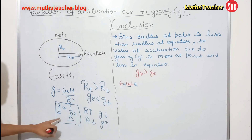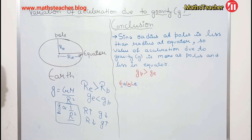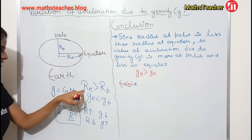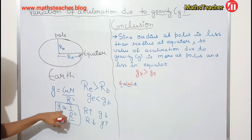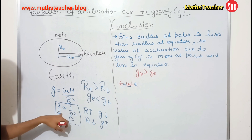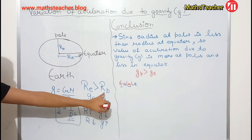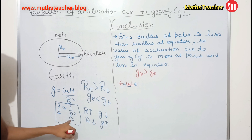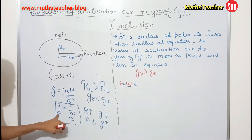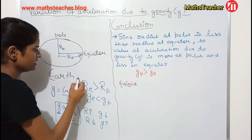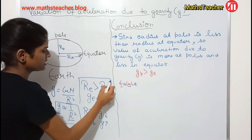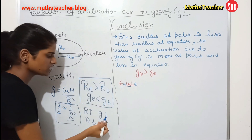The relation between g and r is inversely proportional. If the radius at the equator is more, then gravity there will be less. If the radius at the poles is less, then gravity there will be more. Because the relation between them is inversely proportional. This is the conclusion: acceleration due to gravity at poles is greater than acceleration due to gravity at equator.